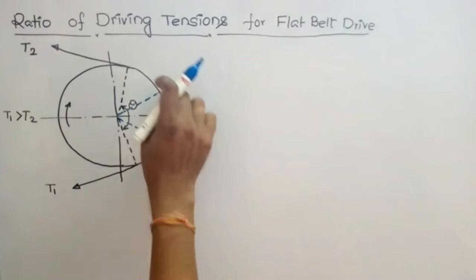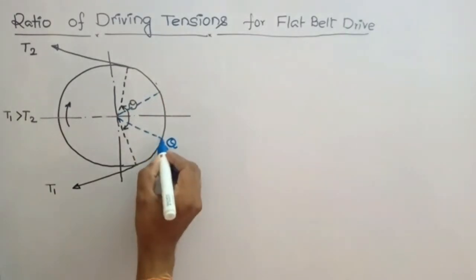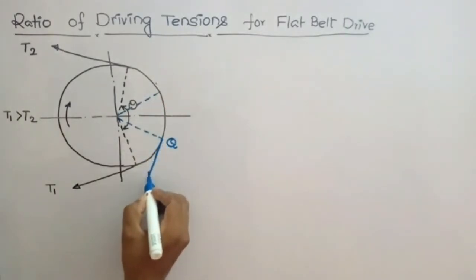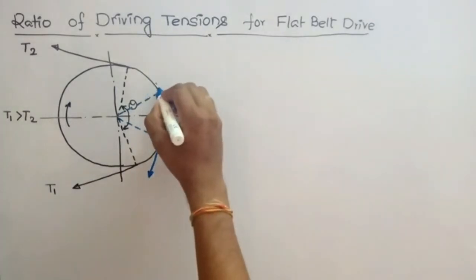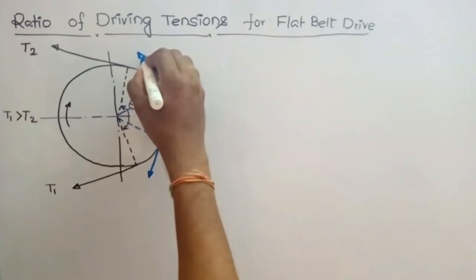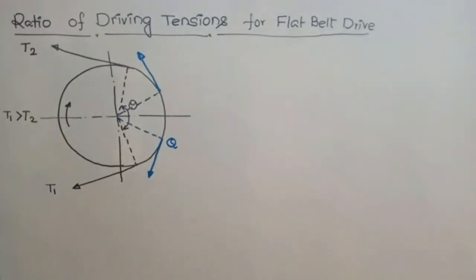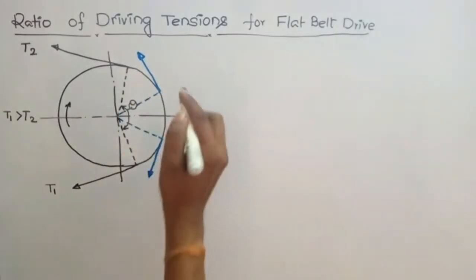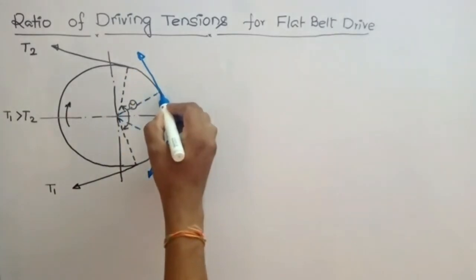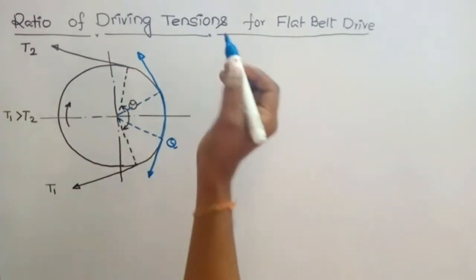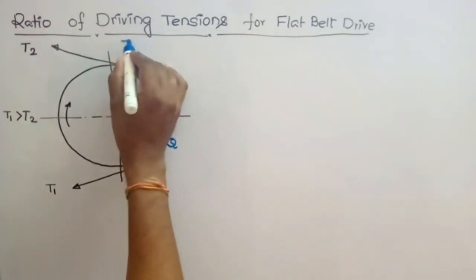If we consider this small elemental portion of the belt, the tension is always perpendicular to the radial distance. So the tension on this side, let us take as T.